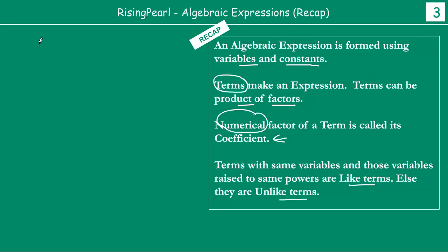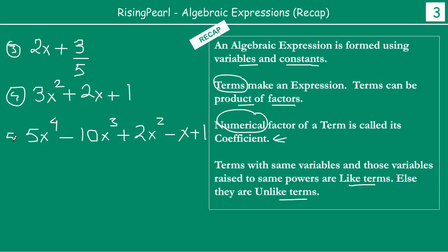So let's take some examples. Say this time we write something like 2x plus 3 divided by 5. Then we write something like 3x squared plus 2x plus 1. Then we write something like 5x to the fourth minus 10x cubed plus 2x squared minus x plus 1. So now see, we have given you some examples. Let's call this the third example, this is the fourth example, and this is the fifth example.